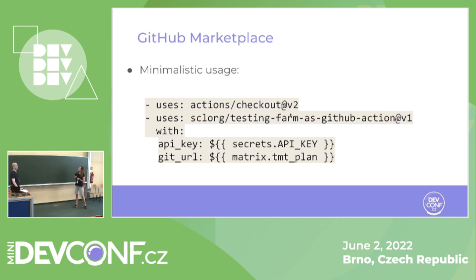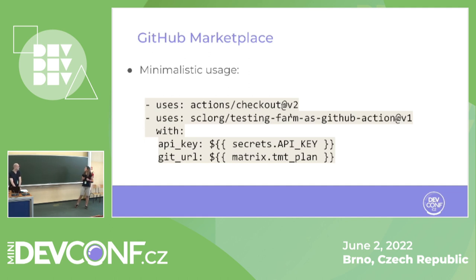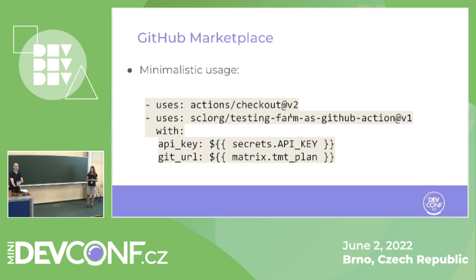Do you know what can seem wrong in this slide? I would say it's the line with the matrix. The GitHub Action — if you want to run some composite action like ours — you can do it on more targets. For example, if you want more TMT plans to be run, you specify the matrix. In the matrix you specify all the TMT plans you want to run, put the matrix variable into the composite action, and it will run for all of them. Because for CentOS Stream or RHEL you can have totally different testing plans — and that's why the matrix is used for it.